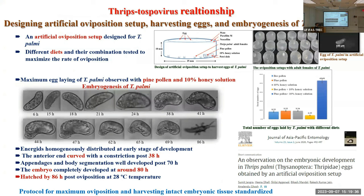Moving to studying thrips-tospovirus interactions at the cellular level. To do this, we need a cell line to interact with the viruses, but to date no cell line was available for Thrips parvispinus. So we undertook a project to develop a cell line for Thrips parvispinus, for which we needed embryonic tissue.